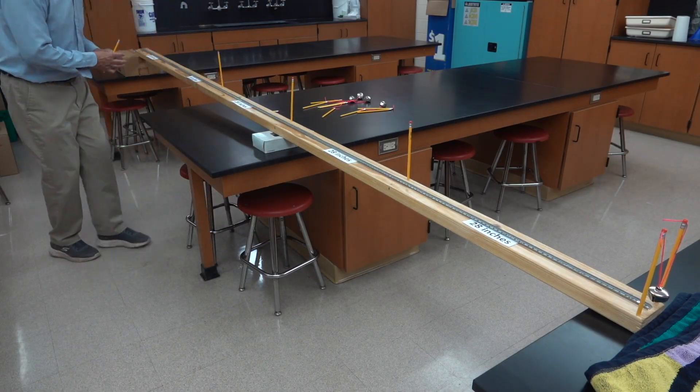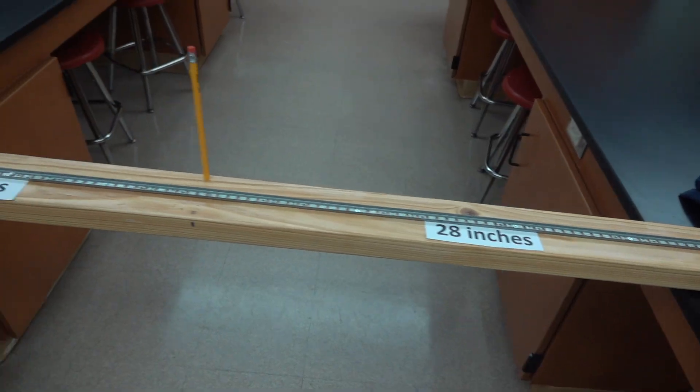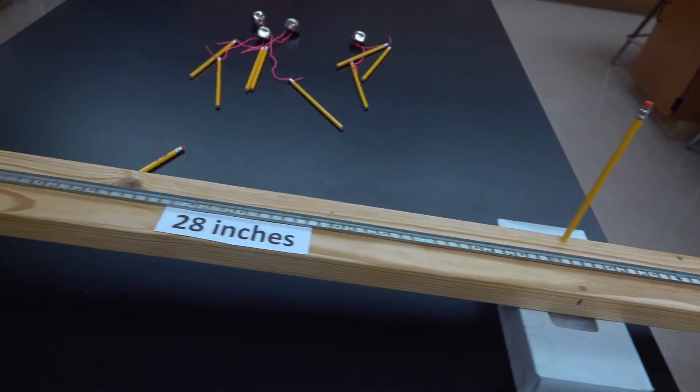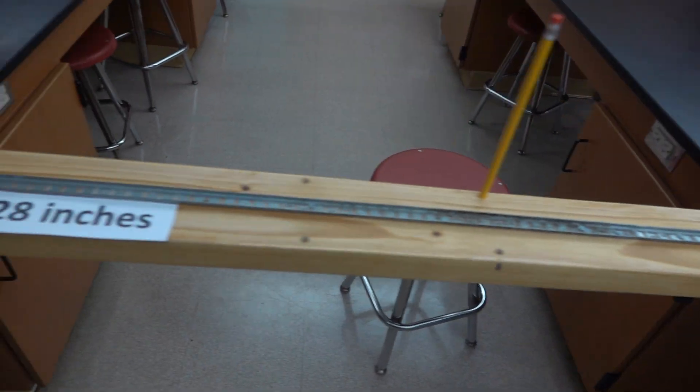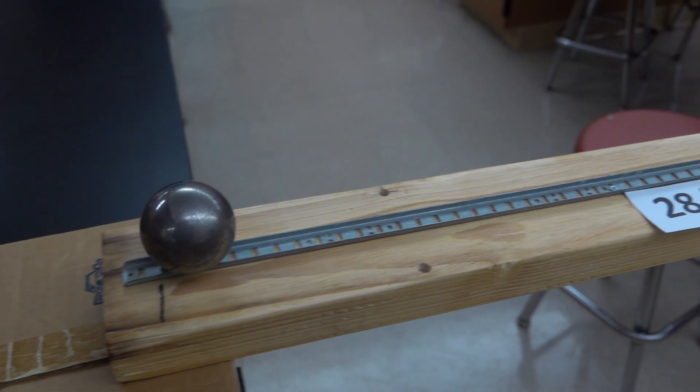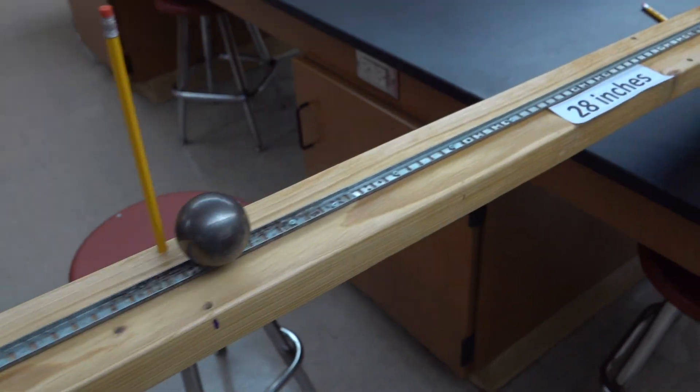I'm going to start this experiment by dividing the track into five equal parts. And each segment is going to be 28 inches long. I've angled the track so it takes about five seconds for the ball to reach the bottom.